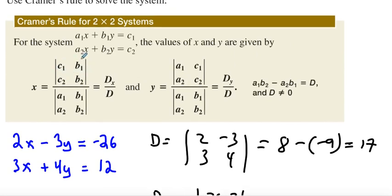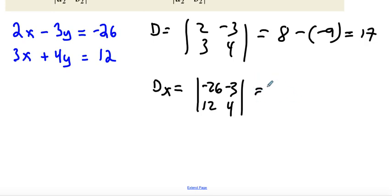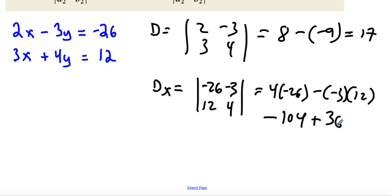And this is where this comes from right here, where c of 1, c of 2 became this guy right here, and then b1, b2 is that. So let's go ahead and do that then. So we're going to multiply 4 times negative 26 minus negative 3 times 12. So as we work that out right there, that's going to give us negative 104. And then multiplying this out right here, we'll get 36. And when we do that bad boy, that will give us negative 68.